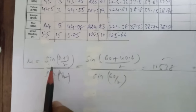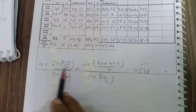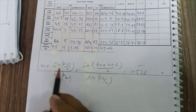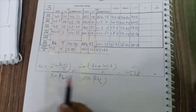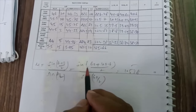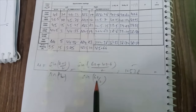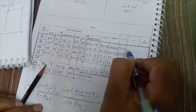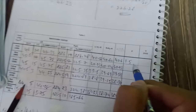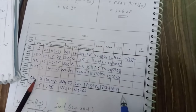Now I am going to determine the refractive index of various colors. To determine the refractive index, we use the formula: μ = sin((A + D)/2) / sin(A/2). Substituting values with A = 60 degrees and the deviation angle, we get the refractive index of violet color equal to 1.538. This reading is tabulated. Similarly, we can measure the refractive index values of various colors.